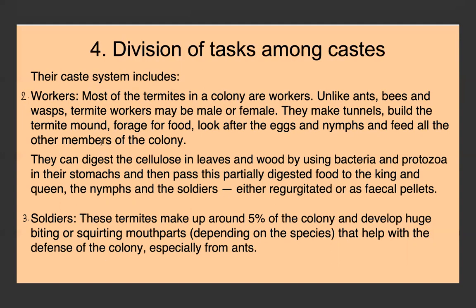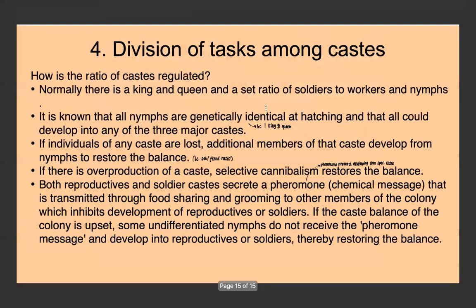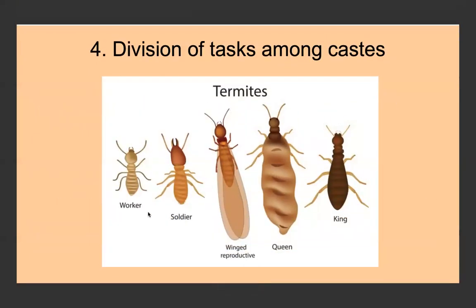The third caste is soldiers — about five percent of the termites. They have huge biting or squirting mouthparts, depending on the species, which helps with defense of the colony, especially against ants. A diagram may show the different castes: the queen, the winged young reproductive, a soldier with its biting mouthpart visible, a worker, and the king. Exam questions may ask you to label each type or describe its role.